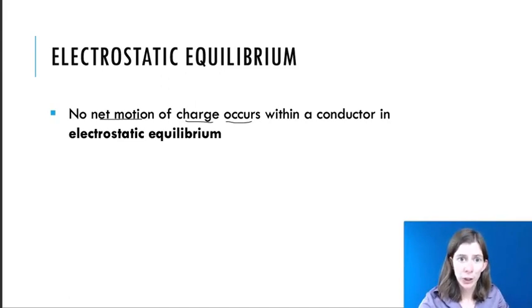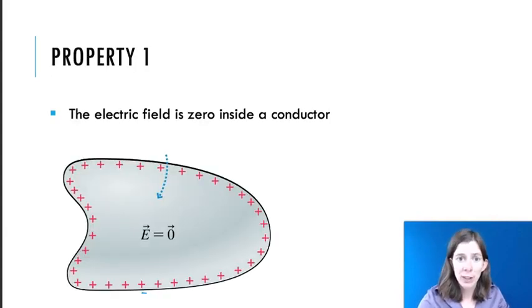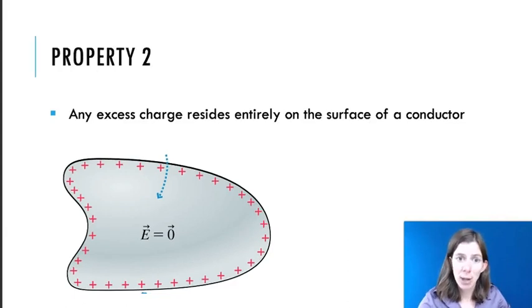Once your conductor is in equilibrium, let's look at four properties of these conductors. The first one is that the electric field is zero inside the conductor. It's best to think about what would happen if this was not the case. If you had an electric field inside the conductor, then the electric field would cause the charges to move, because an electric field causes a charge to experience a force. So if we're in static equilibrium, then we must have zero field inside the conductor.